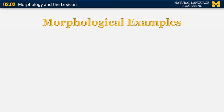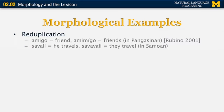In different languages, we can have morphological rules that are not as simple as just adding an -s for plural. In the language Pangasinan, we can have reduplication of morphemes — 'amigo' means friend, and 'amimigo' is the plural for friend, where a morpheme is reduplicated in the middle of the word. Similarly in Samoan, 'savali' means 'he travels,' and 'savavali' is the plural 'they travel.'